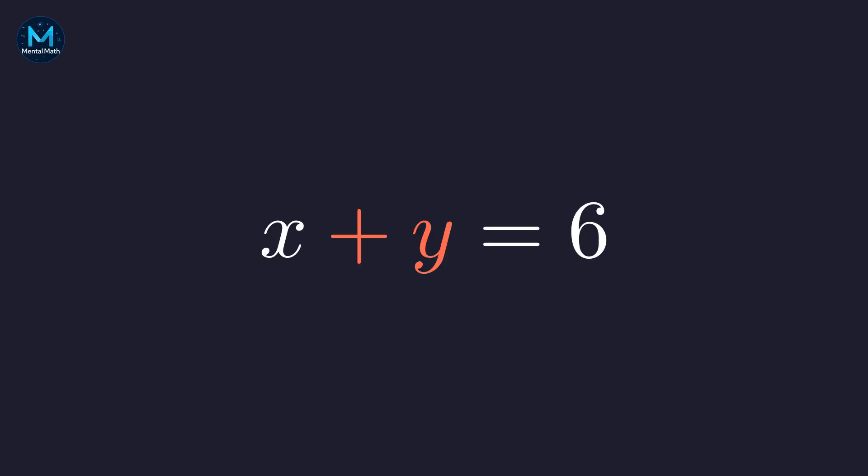Now, to isolate y, we just need to rearrange this slightly. Moving x to the other side gives us y equals 6 minus x. This is our expression for y.